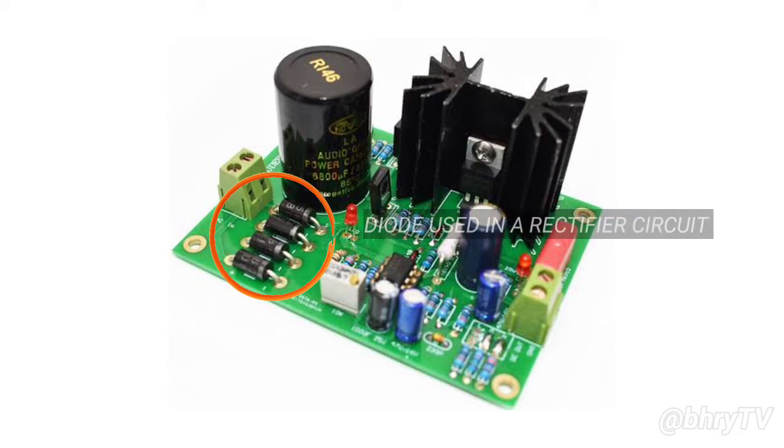Diodes are also known as rectifiers. The term diode is reserved for small signal devices which consume a maximum current of 1 ampere, while the term rectifier is used for power devices.